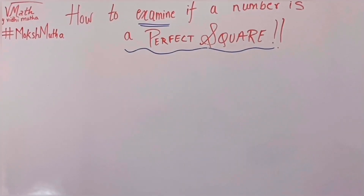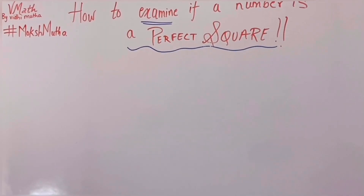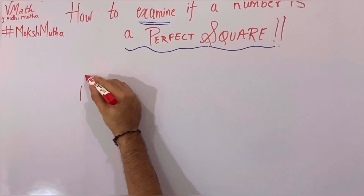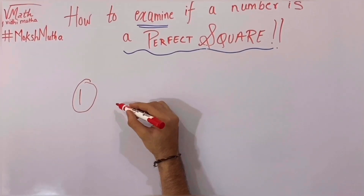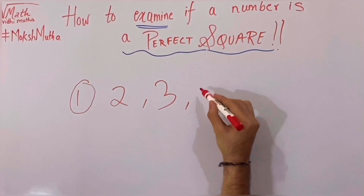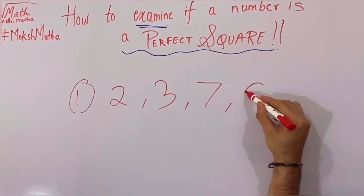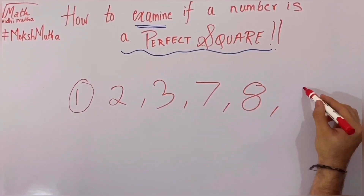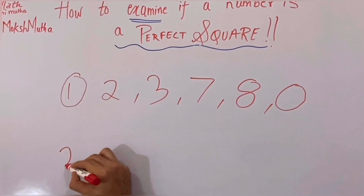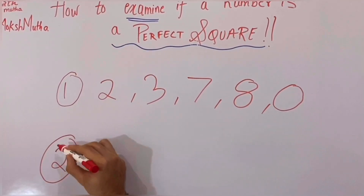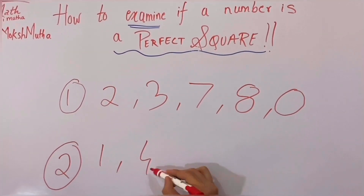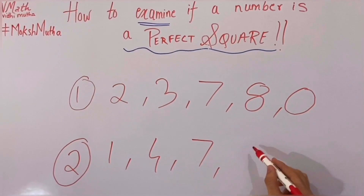There are two conditions to examine if a number is a perfect square number or not. Condition one is that the number at the unit's place shouldn't be 2, 3, 7, 8, or a single zero. Condition two is that the digital sum of the number should be 1, 4, 7, or 9.